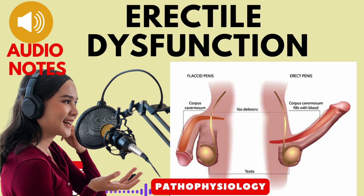The diagnosis of ED involves a comprehensive clinical evaluation. This includes screening for depression, assessing testosterone levels, and exploring the patient's medical history, drug use, and lifestyle factors. Physical examinations focus on genital and extragenital signs of underlying disorders. Psychologic causes are particularly considered in cases of abrupt onset in young, healthy men.